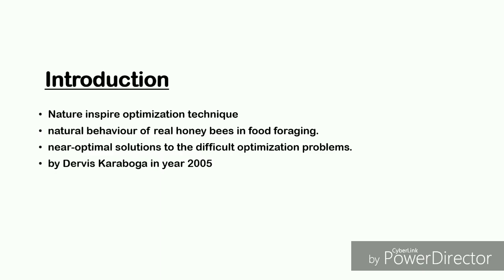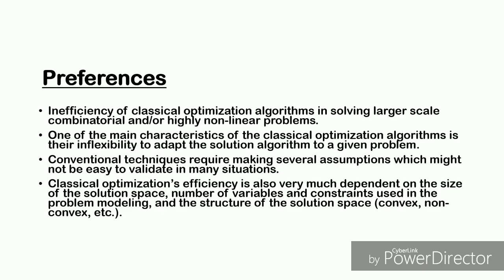Proposed by Dervis Karaboga in the year 2005, ABC was motivated by the limitations of classical optimization algorithms in solving large-scale combinatorial and highly non-linear problems. One of the main characteristics of classical optimization algorithms is their inflexibility to adapt the solution algorithm to a given problem.